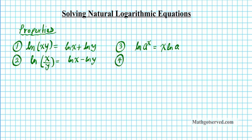Formula four is the inverse property: the natural logarithm of e to the x is the same thing as e to the natural logarithm of x, and both are equal to x. What is happening here is that the ln and the e are inverse operations, so they cancel each other out.